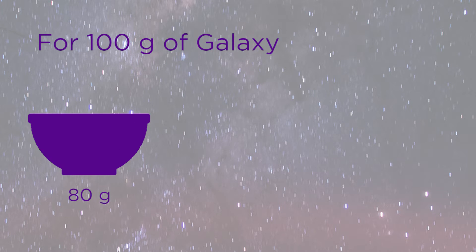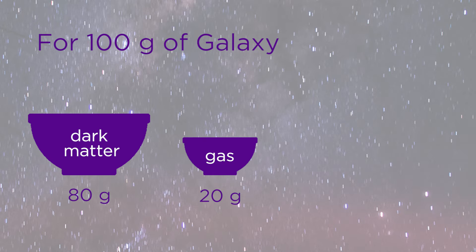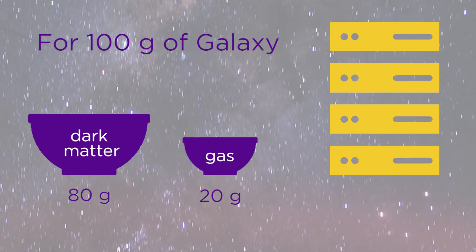For 100 grams of galaxies: 80 grams of dark matter, 20 grams of gas. So how do you bake your galaxy? You need an oven, a powerful one. For us, the oven is a supercomputer.